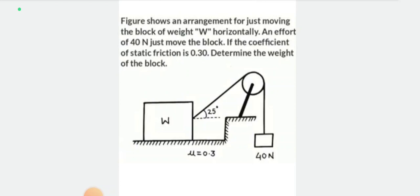There is a problem: the figure shows an arrangement for just moving a block of weight W horizontally, and an effort of 40N is required to just move the block. If the coefficient of static friction is 0.30, determine the weight of the block.